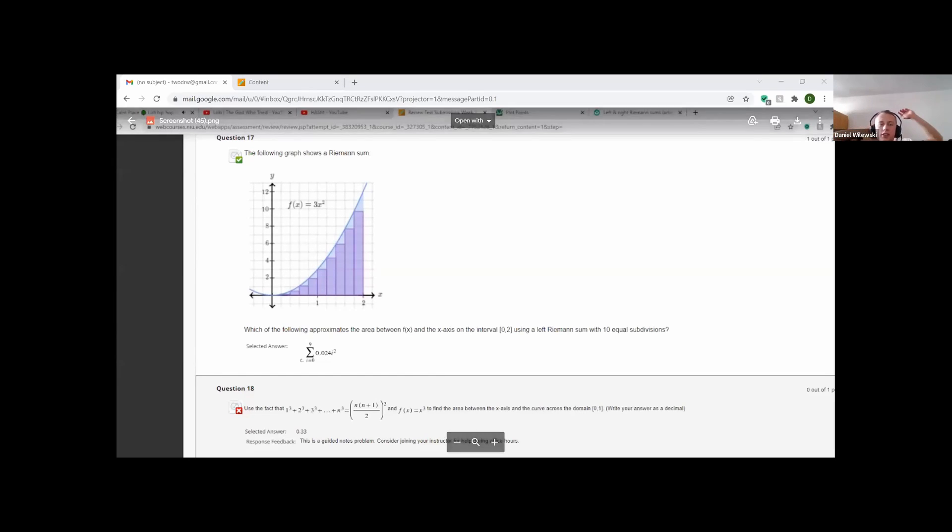So for question 17, I know why it goes I0 to I9, and I know why it's I squared, but I was wondering how you got that 0.024, because when I was going over it, I was thinking for every one, because we're going across 2x units in this graph.